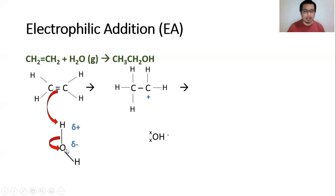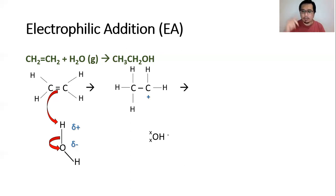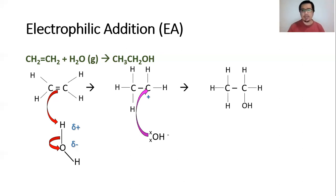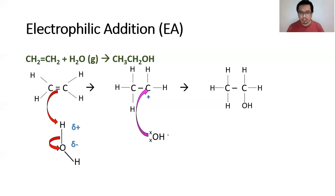Next, the remaining part of the steam molecule — the hydroxide ion — comes in to complete the reaction. The hydroxide ion, being negatively charged with a lone pair of electrons, attacks the carbocation. This eventually completes the reaction, and as a result you see ethanol produced on the right-hand side. This is the mechanism for electrophilic addition with a polar molecule, which is steam.